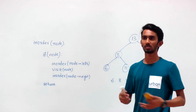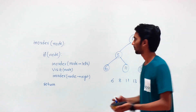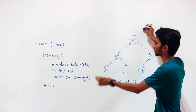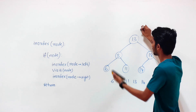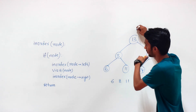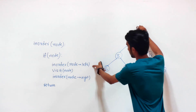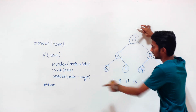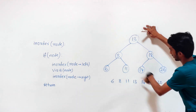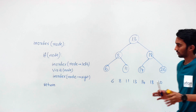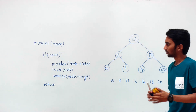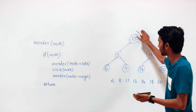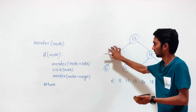Suppose you were to traverse a binary search tree in an in-order fashion. If you are at the root node, you can write a function that calls itself recursively — calling the left subtree, visiting the root node, and calling the right subtree. We have some mechanism to get back to the root node after we are done with the entire left subtree.